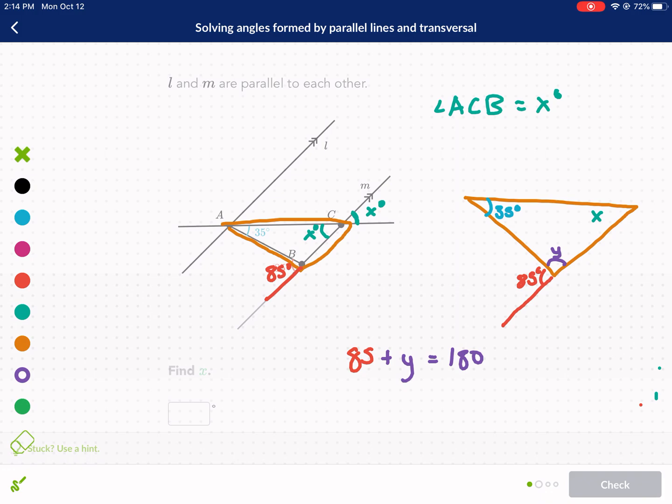So now I just do 180 minus 85. And as you get y equals 95 degrees. So now I can erase y and I know that this is 95 degrees. Now I can form a new relationship with these three angles. I can say that 35 plus 95 plus x equals 180. Why? Because the three angles of a triangle need to add up to 180 degrees, as we just said.